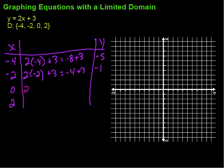Next one, put in 0, so 2 times 0 plus 3. So we have 2 times 0 is 0 plus 3 would be just 3. And finally put in 2, so 2 times 2 plus 3. 2 times 2 is 4 and 4 plus 3 is 7.